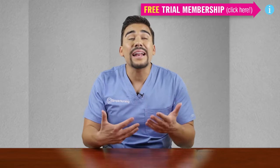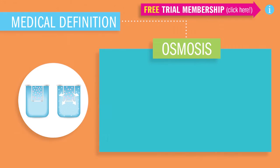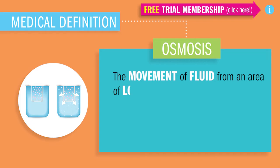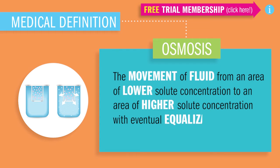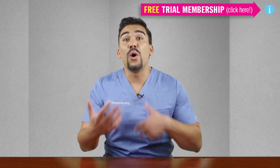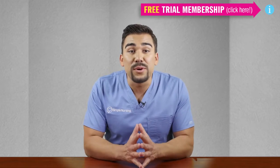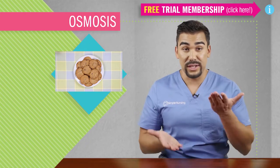Osmosis is kind of like the wet version of diffusion. Osmosis is the movement of fluid from an area of lower solute concentration to an area of higher solute concentration, with eventual equalization of solute concentrations. Basically the whole goal of diffusion and osmosis is to balance and equal out the playing fields here.